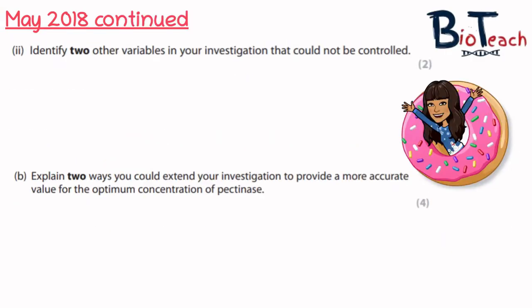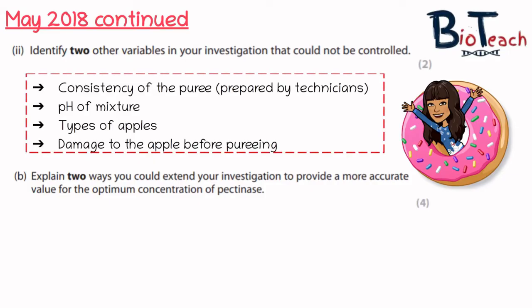Part two of this question asked you to identify two other variables that could not be controlled. With this pectinase example, the two variables I cannot control are things to do with the apple itself — for example, the consistency of the puree prepared by the technicians, the mixture pH value, the types of apples used, or how much damage was done to the apple before pureeing, which might affect how much juice is available. You could also mention the age of the apples as a valid response.